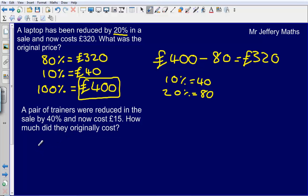Okay, second question. It says a pair of trainers were reduced in the sale by 40% and now cost £15. How much did they originally cost?